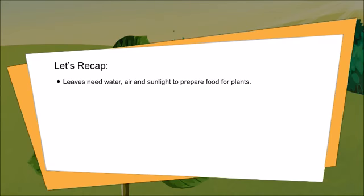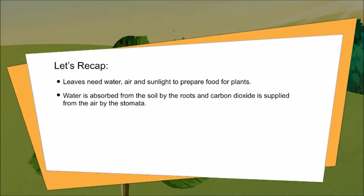Let's recap. Leaves need water, air, and sunlight to prepare food for plants. Water is absorbed from the soil by the roots and carbon dioxide is supplied from the air by the stomata.